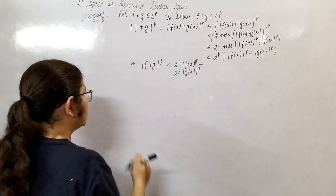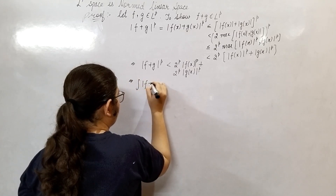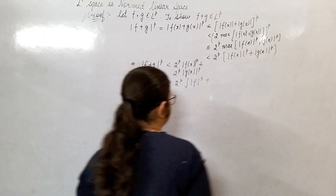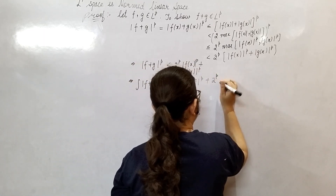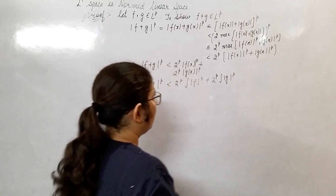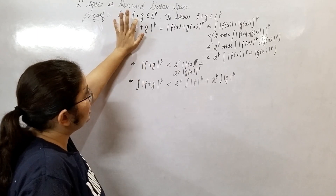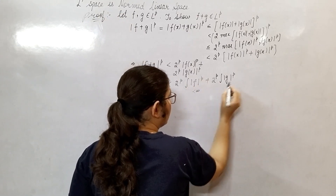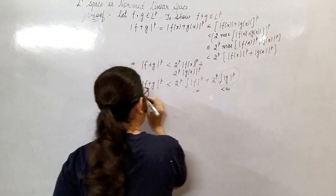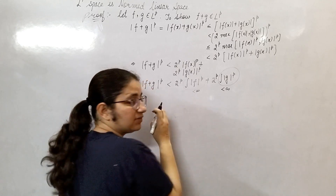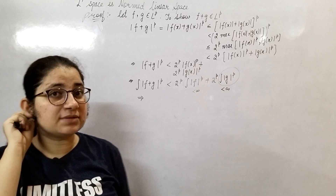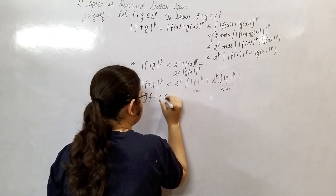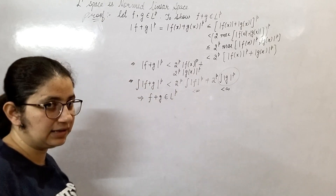Now, integrating on both sides, we get the inequality. As we know that f and g both belong to LP, then the integral of |f|^p is finite and the integral of |g|^p is also finite. This implies the integral of |f + g|^p is also finite. This is the definition of LP space — when you integrate with the power p and it is finite. This implies f plus g belongs to LP space.